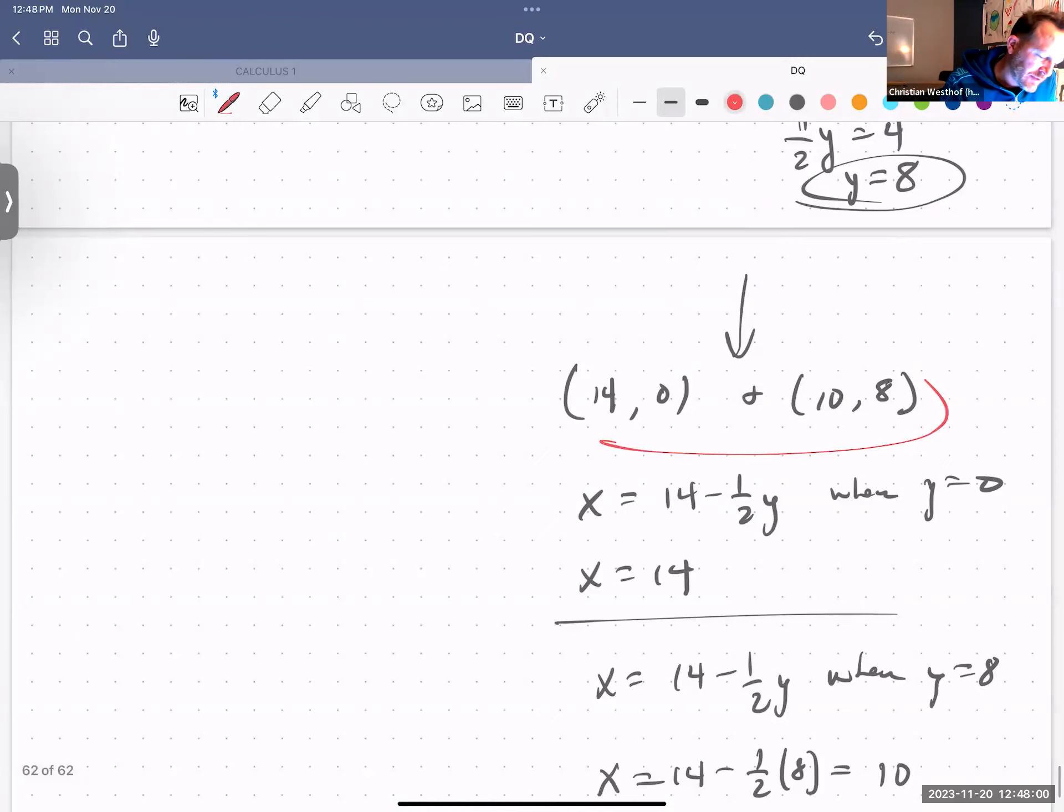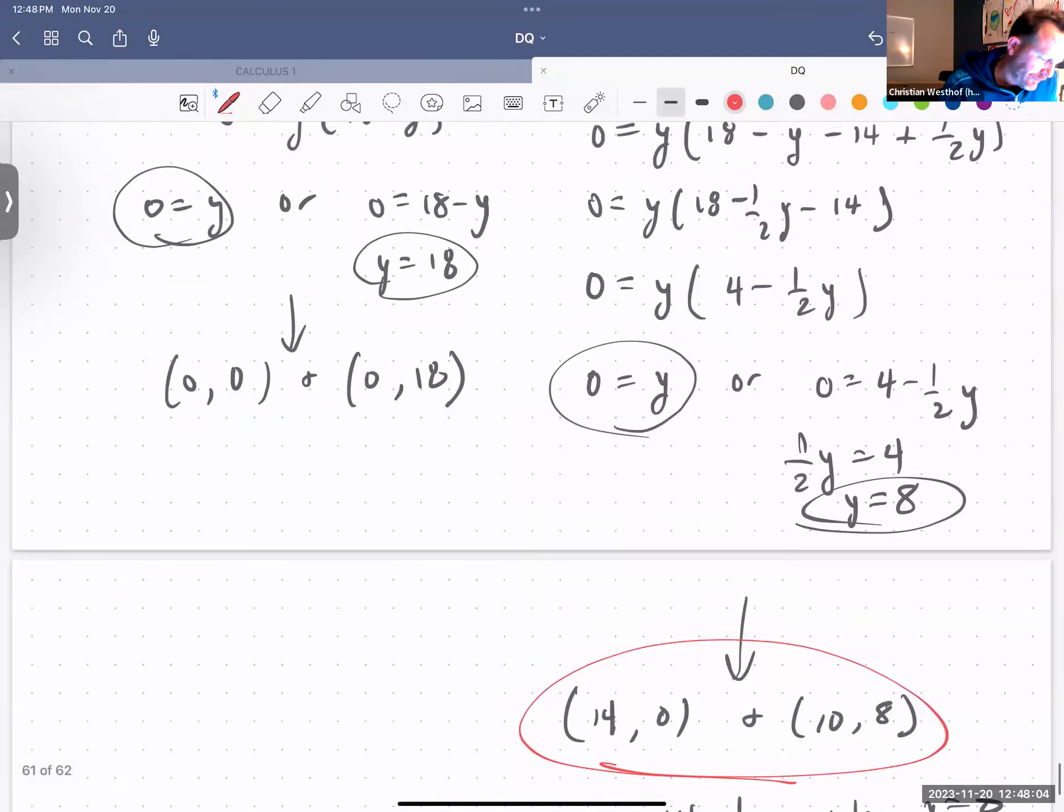So our fixed points are 14, 0, and 10, 8, and 0, 0, and 0, 18. All right. You all take care. I will send another video here in a little while.